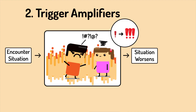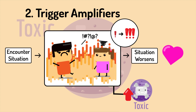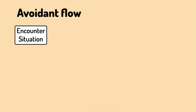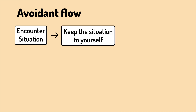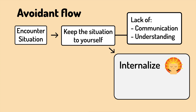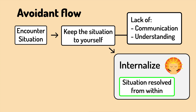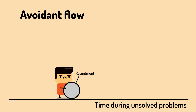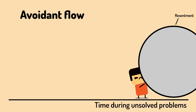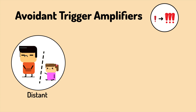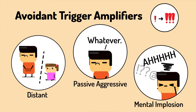Trigger amplifiers are different for each player, as we all respond to triggers differently according to our attachment style. When dealt with incorrectly, our responses can be perceived as toxic, which may lead to devastating repercussions. People who are avoidant usually keep the situation to themselves, leading to a lack of communication and understanding. If they overcome the situation through internalization, it can resolve peacefully. However, if it's never resolved, the problem lingers as resentment, growing bigger over time. Some avoidant trigger amplifiers include distancing the other person, being passive aggressive, or in extreme cases, imploding mentally.